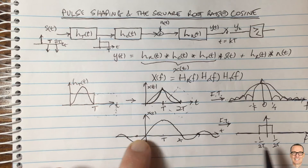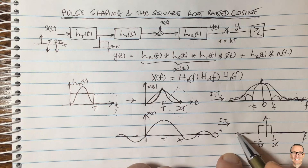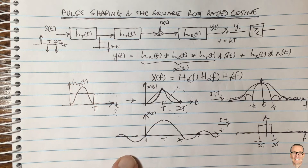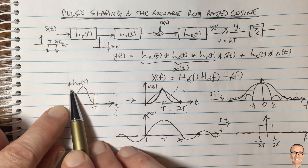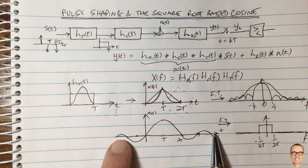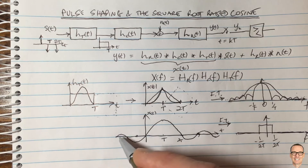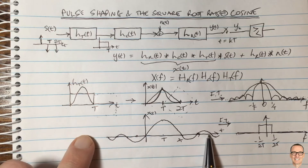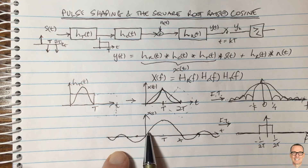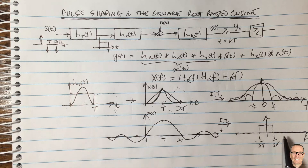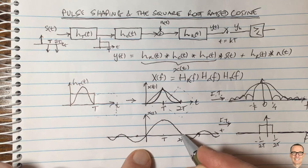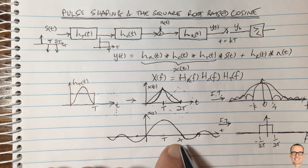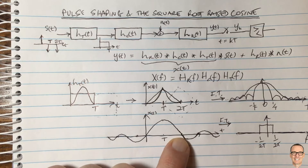Nothing comes for free though. The sinc function extends for an infinite amount of time, whereas the square and Gaussian pulses were contained between 0 and T. In practice we'd have to truncate it, but the oscillations are significant, so truncation takes us outside the compact frequency band. Also, the sinc crosses zero steeply, so even slight timing errors cause inter-symbol interference from one symbol to the next.